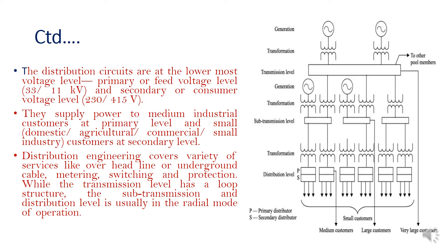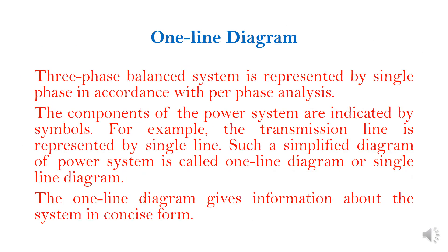These are the modern power system structures. Next, I am going to explain the one-line diagram. A three-phase balanced system is represented by a single phase in accordance with the per-phase analysis. In order to make calculations in a simple manner, we have to use the per-phase analysis. The components of the power system are indicated by symbols; for example, the transmission line is represented by a single line. Such a simplified diagram of a power system is known as a single-line diagram or one-line diagram.